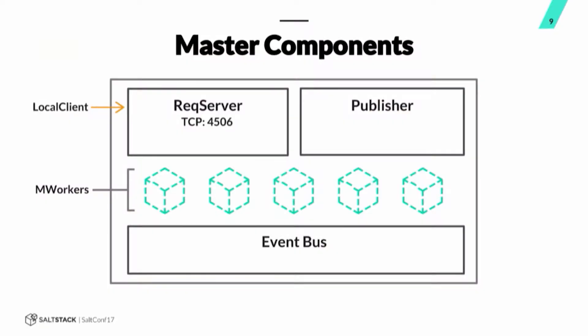Let's go back to our master component slide. The local client passes that information to the master — well, how does it do that? First, it makes a connection to the master's rec server on TCP 4506. The rec server receives that request and farms out that work to an available mworker process, over the workers IPC. At that point the mworker starts doing all kinds of work — checking for authentication, looking to see if this user is authenticated, is it authorized to run this command — and then that's where it starts actually creating the job ID.